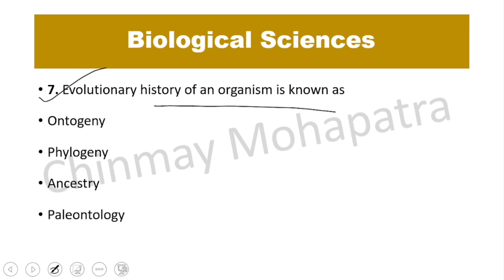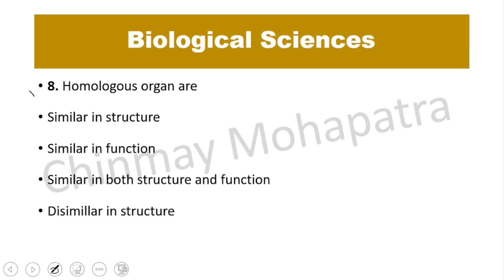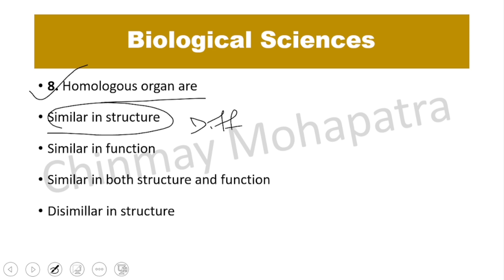Question number 7. The evolutionary history of an organism is known as? Phylogeny is the right answer — it is the evolutionary history of an organism. Question number 8. Homologous organs are? They are similar in structure but different in function. Option A is correct.